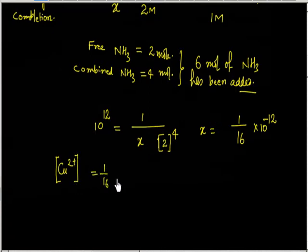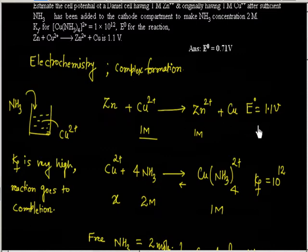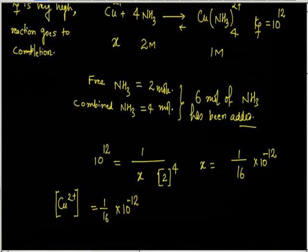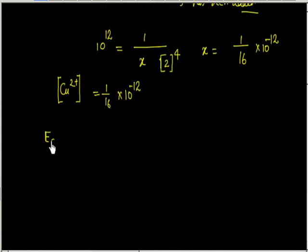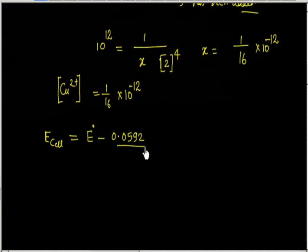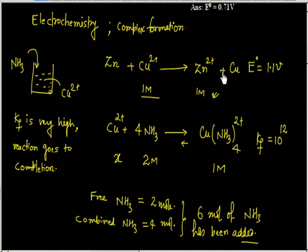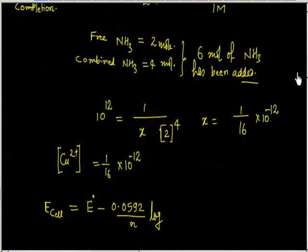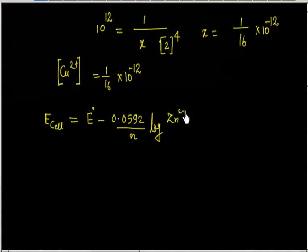So the concentration of Cu²⁺ is 1/(16 × 10¹²). Now that we know [Cu²⁺], we can calculate E_cell using the Nernst equation, because [Zn²⁺] remains 1M. E_cell equals E° minus (0.0592/N) times log([Zn²⁺]/[Cu²⁺]).